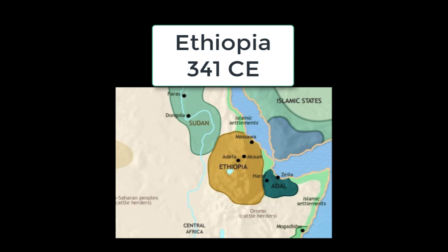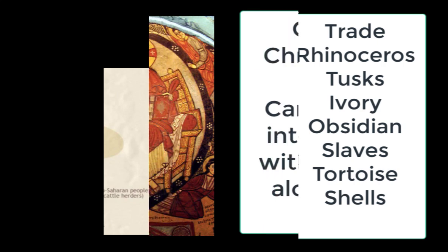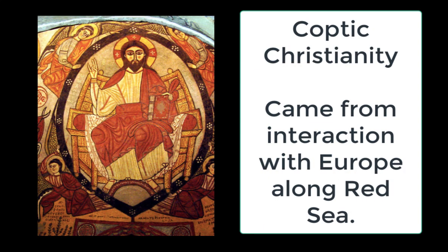Up in the northeast of Africa, the kingdoms of Ethiopia formed a similarly diverse society, due to connections along the Indian Ocean trade route. They traded diverse goods like rhinoceros tusks, ivory, obsidian, slaves, and tortoise shells. However, there was one big difference in the case of Ethiopia — they developed both Indian Ocean trade and trade with European countries due to their location along the Red Sea. This led to a diffusion of ideas as well as goods. Ethiopia brought in European Christianity and synthesized it with local beliefs, leading to a unique form called Coptic Christianity.